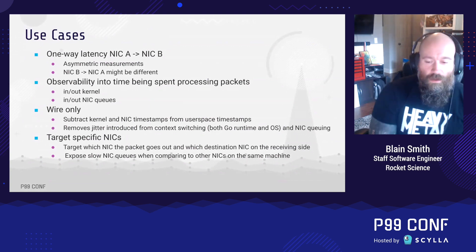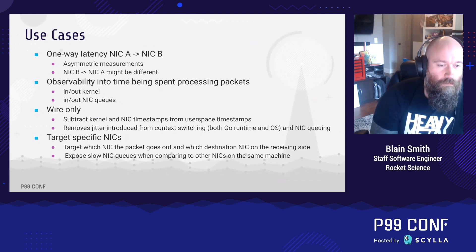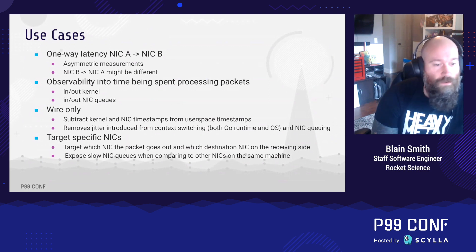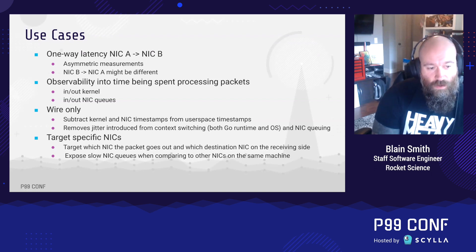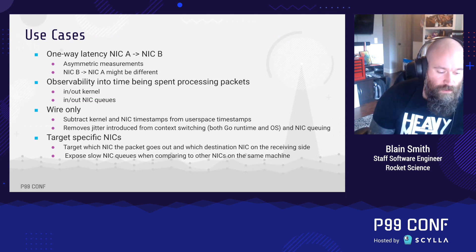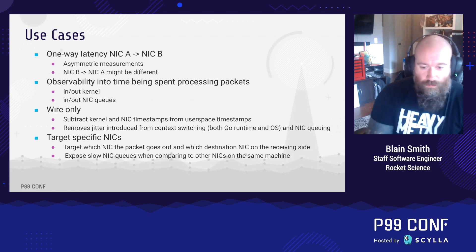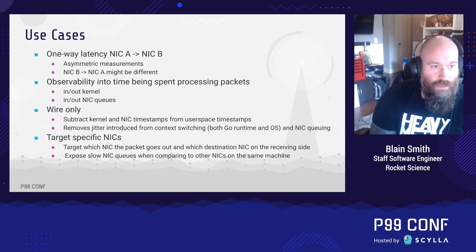The ping program we're all used to does a two-way measurement — both forward and back — but you can actually get a single direction with this. You can do observability into time being spent processing packets, so you can understand at the kernel level how long packets are spending in and out, and even how long packets are spending in the network queues. We can get wire-only times by subtracting the kernel and network timestamps from the user space times, literally getting NIC-to-NIC latency. Because of that, this actually removes the jitter introduced from context switching, both in the Go runtime and the host operating system, and also from the NIC queues as packets sit in the buffers coming in and out.